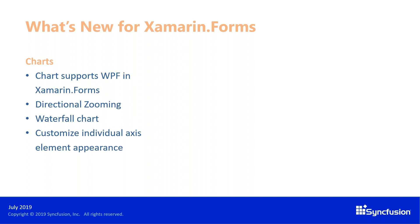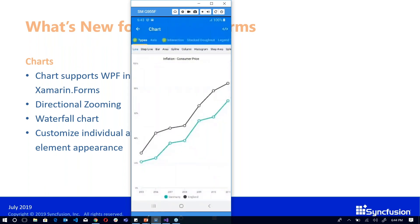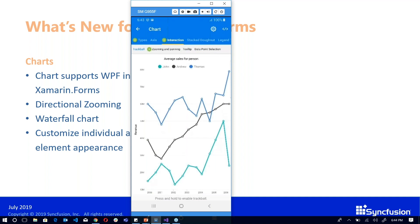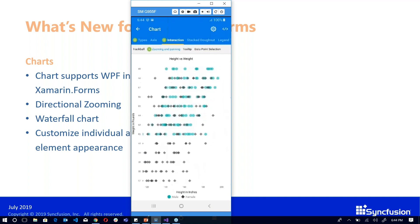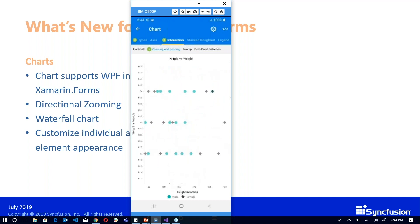Let's see a demo. The waterfall chart type is used to check revenue and profit for any sales or organization. We've introduced this chart type, and we also have zooming for diagonal, vertical, and horizontal directions — so based on pinch gestures, it can zoom vertically, horizontally, or diagonally. This is now possible with chart zooming.